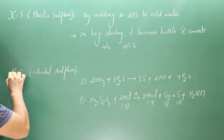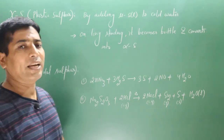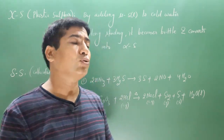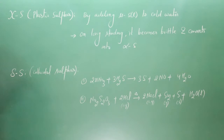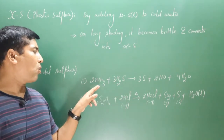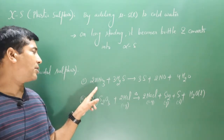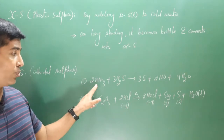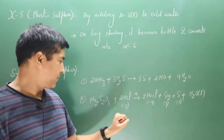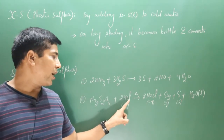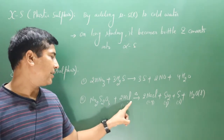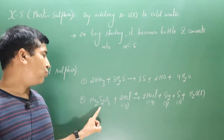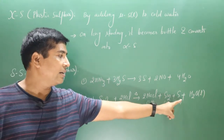Next we have delta sulfur, also known as colloidal sulfur because it makes a colloidal solution. The particle size of a colloidal solution is quite larger than that of a true solution. Delta sulfur can be prepared by passing hydrogen sulfide gas through strong oxidizing agents such as KMnO4, K2Cr2O7, or HNO3. Another method is heating dilute HCl with sodium thiosulfate, which also yields delta sulfur.